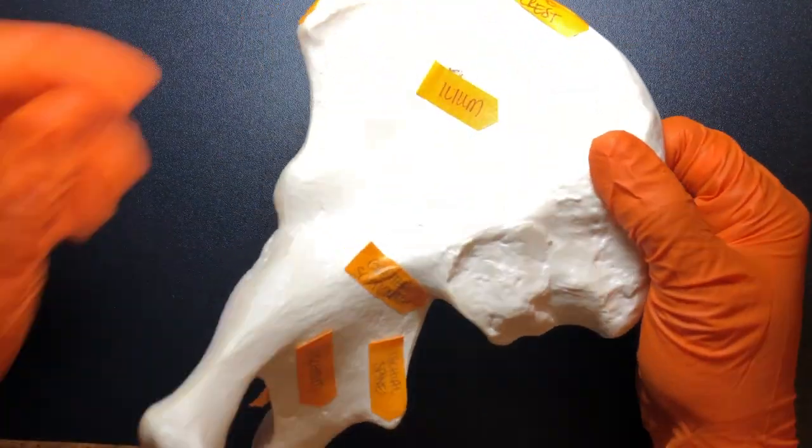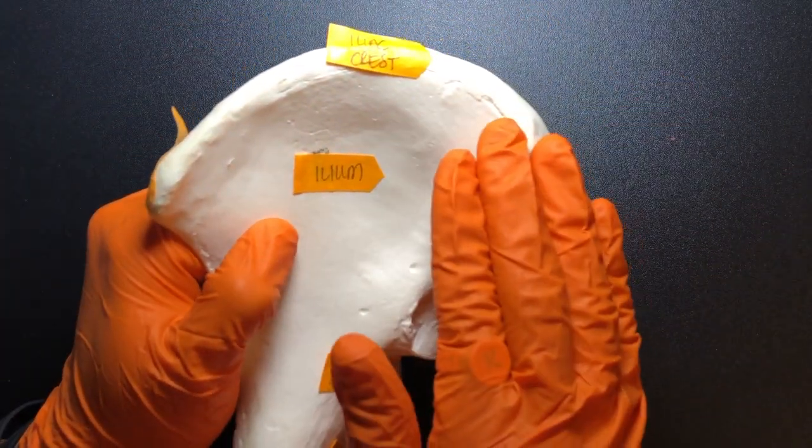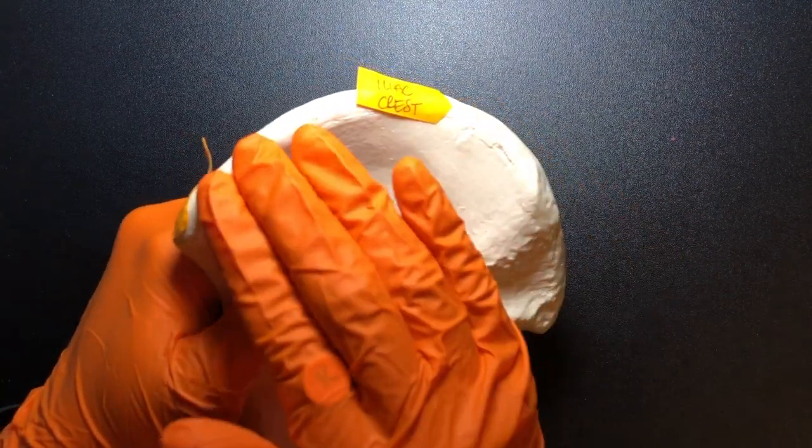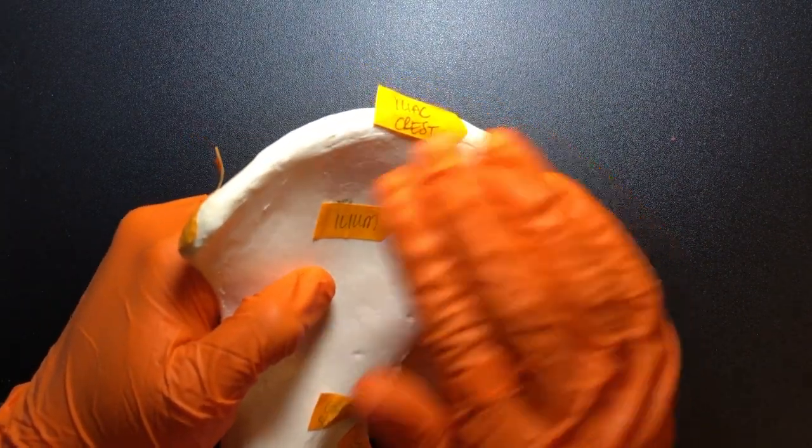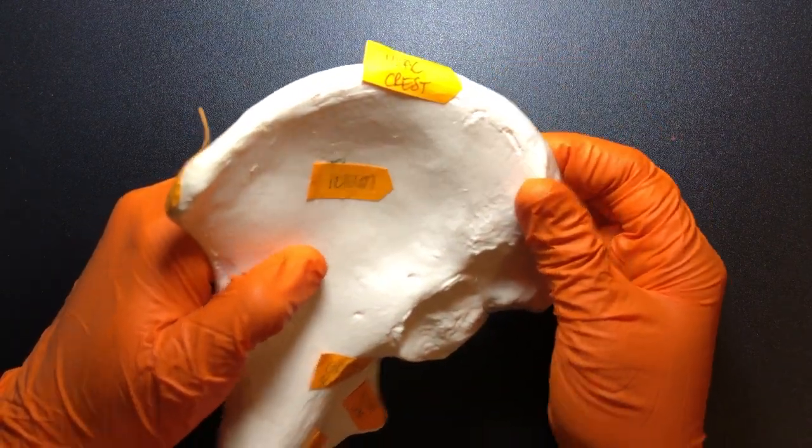So let's go over specific parts of each section. On the most superior portion of the ileum we have this iliac crest. And the iliac crest is something that we can palpate clinically. We can use this as a bony landmark, which is nice.